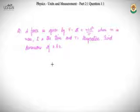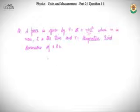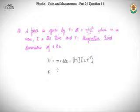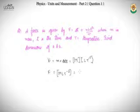First, we need to know the dimensions of force. Force equals mass times acceleration, where mass is M and acceleration is LT⁻². So force has dimensions MLT⁻². We use dimensional homogeneity to find the dimension of A: MLT⁻² = A·t, where t denotes time.